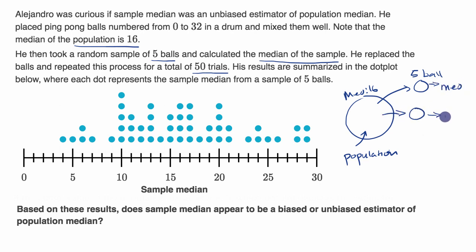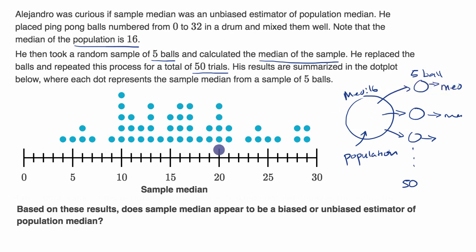He does this repeatedly, calculating the median each time, for a total of 50 trials. So what you see plotted right over here are 50 dots. Every time he took a sample of five balls and calculated the median, we see that as one of the dots. For example, four times he calculated a median of 20, two times he calculated a median of 19, and one time he calculated a median of four.